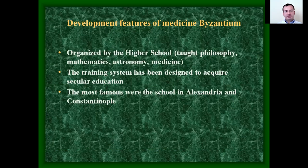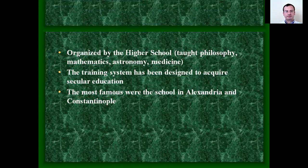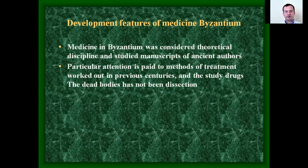The development of medicine in Byzantium was characterized by organized high schools that taught philosophy, mathematics, astronomy, and medicine. The training system was designed to acquire secular education. The most famous were the schools in Alexandria and Constantinople. Medicine in Byzantium was considered a theoretical discipline; manuscripts of ancient authors were studied with particular attention paid to treatment methods worked out in previous centuries. Drugs were studied, but dead bodies were not dissected.